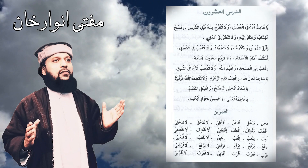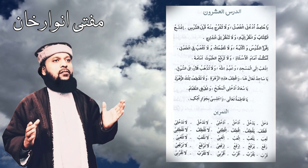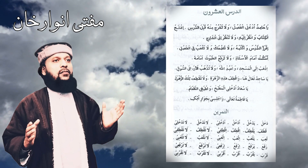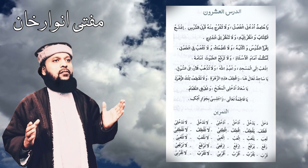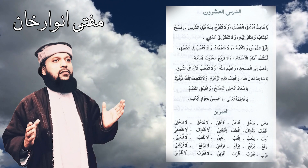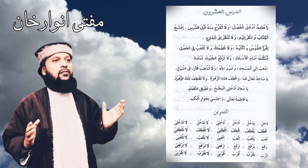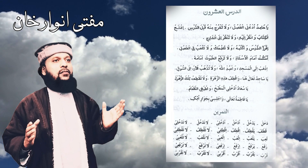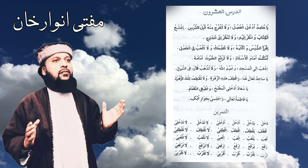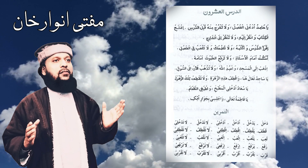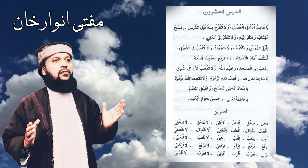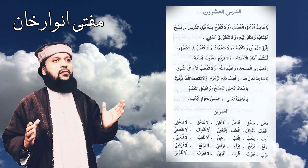An-Nahi literally means to prohibit someone, to order someone not to do something, to prevent or stop someone from doing something. The steps we follow to form a Fi'lun Nahi are: we have to use La — meaning 'no' — at the beginning, and then we give Sukoon to the end of the Mudari. So in the Hazir forms of Fi'lun Nahi, we change the beginning with La and give Sukoon at the end to get the forms of An-Nahi.